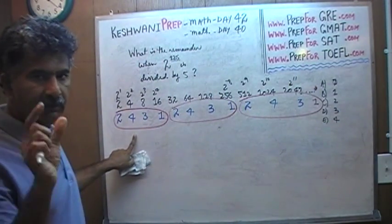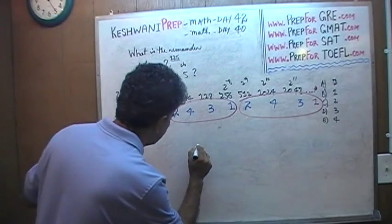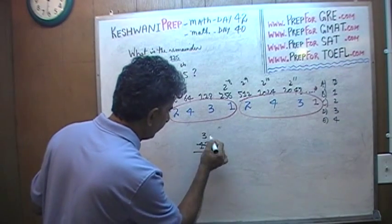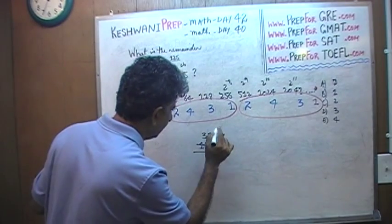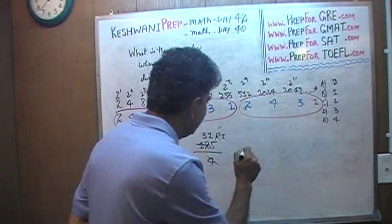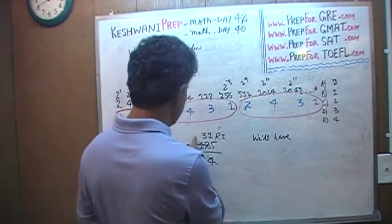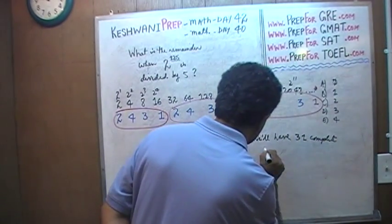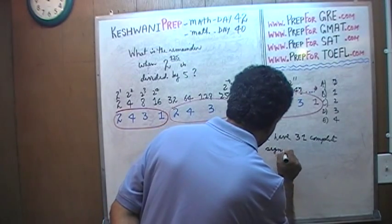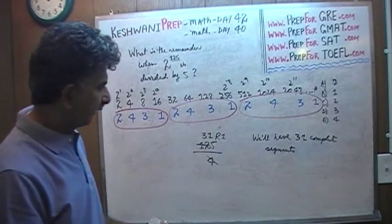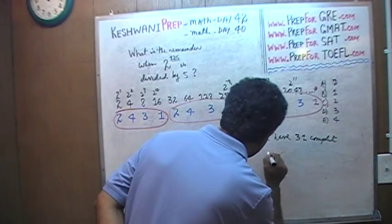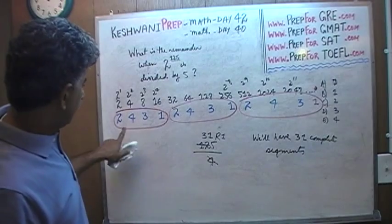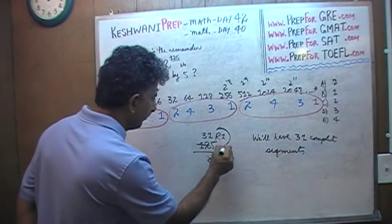So how many groups of 4 do we have in 125? Let's find that out: 125 divided by 4 — 4 goes into 12 three times, and 4 goes into 5 once with a remainder of 1. So we have 31 complete segments and then 1 more to go.